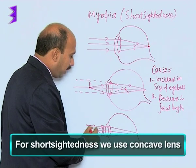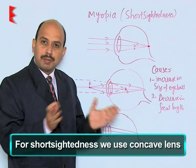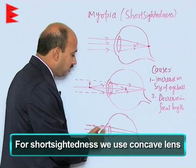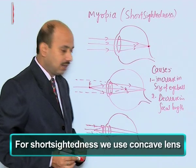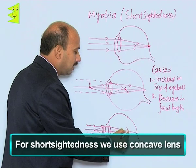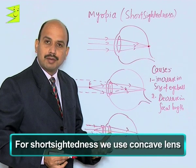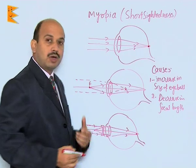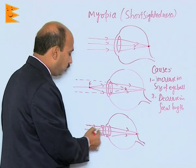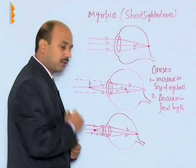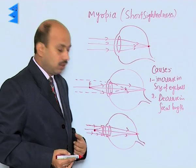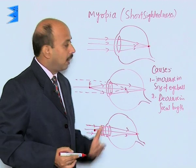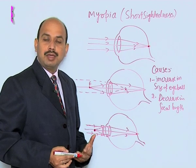Now, I have put a concave lens here. The rays coming from infinity first get diverged by the concave lens, and then these diverged rays fall on the convex eye lens and ultimately converge on the retina. For the eye lens, these rays appear to be coming from the dotted point shown here. By this way, we can correct the myopic eye and this defect can be corrected.